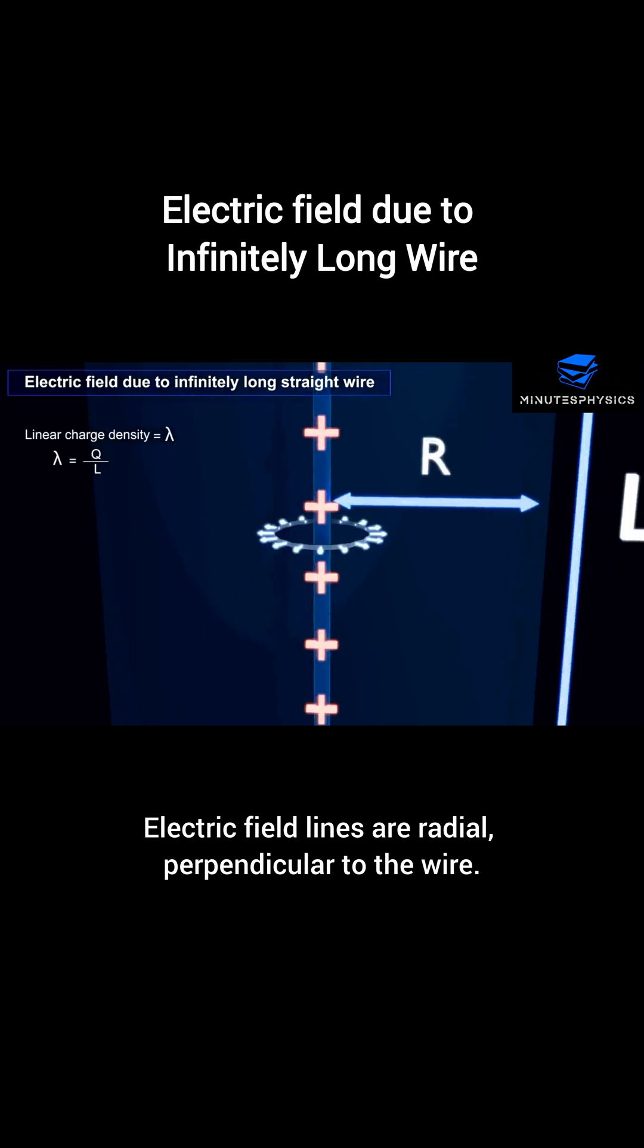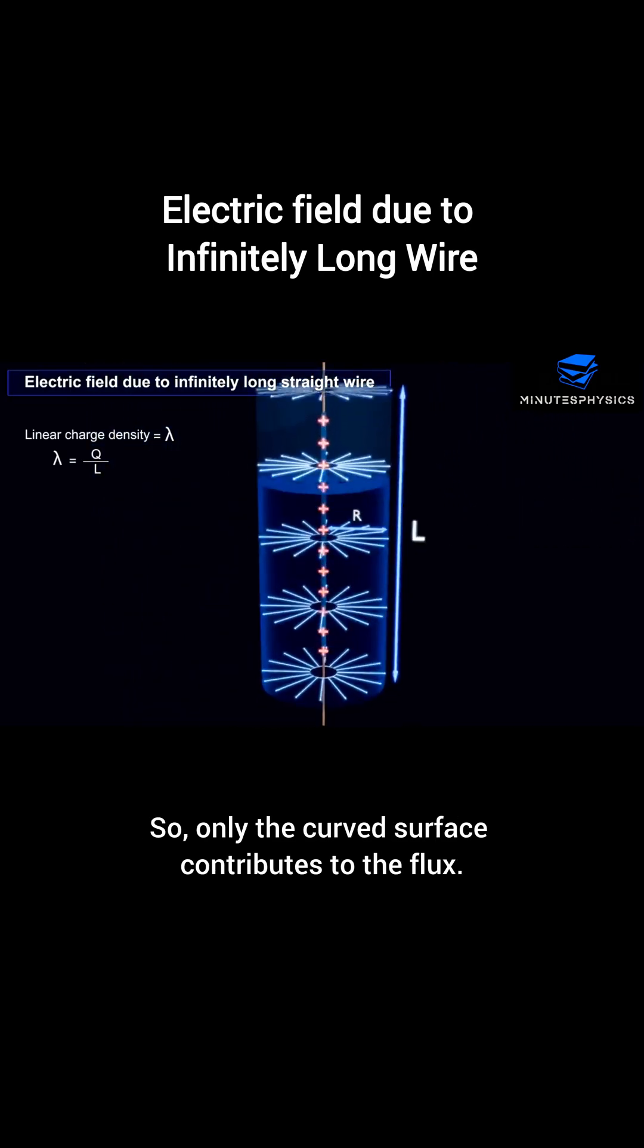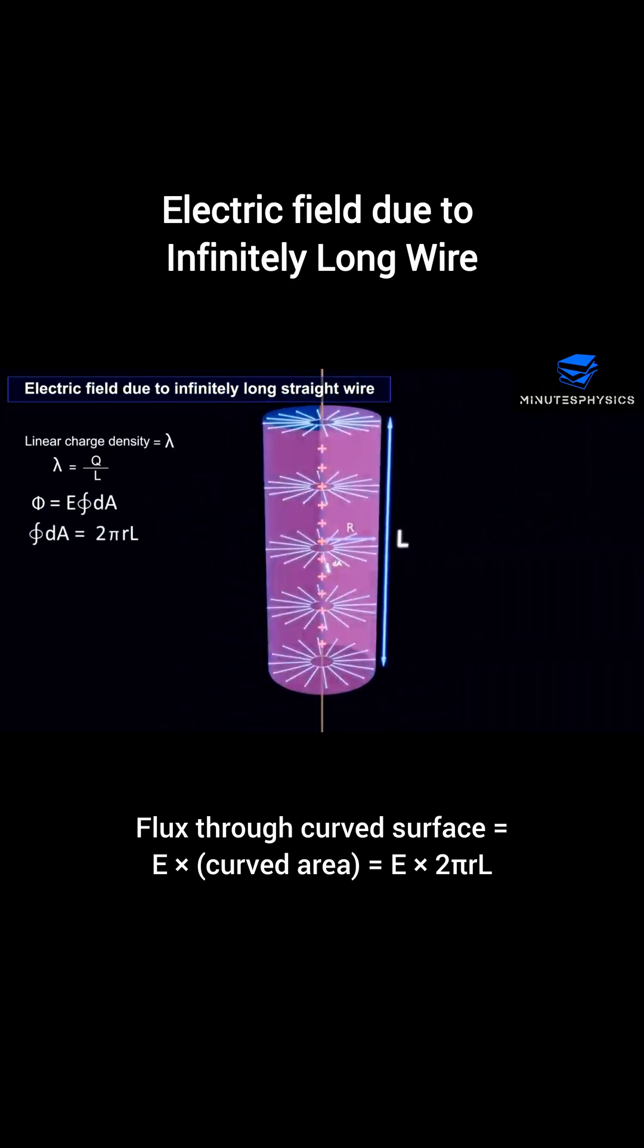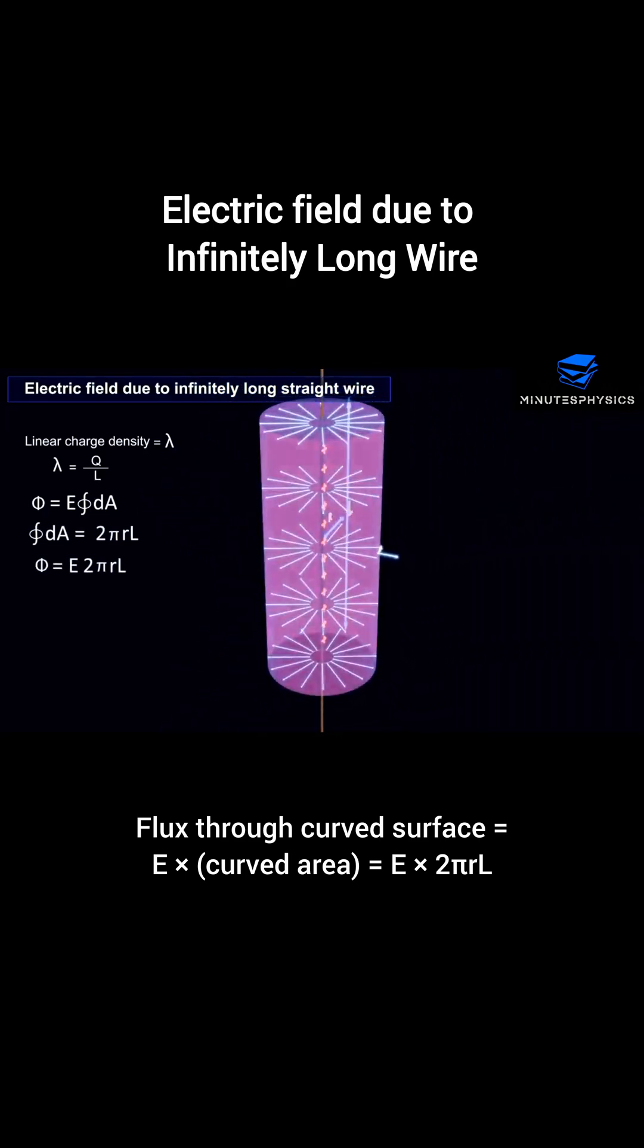Electric field lines are radial, perpendicular to the wire, so only the curved surface contributes to the flux. Flux through curved surface is E times curved area, which is E times 2 pi r l.